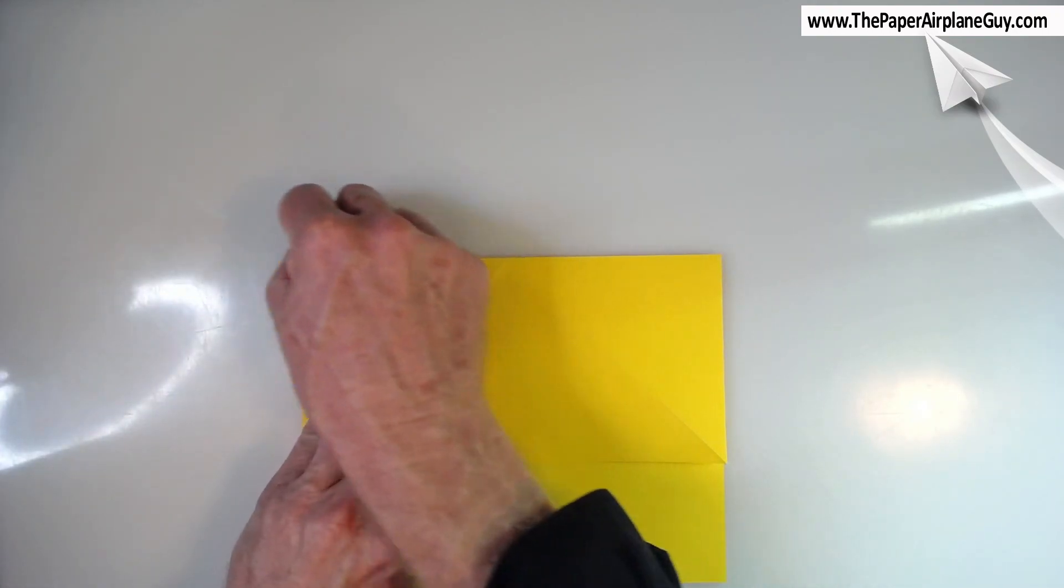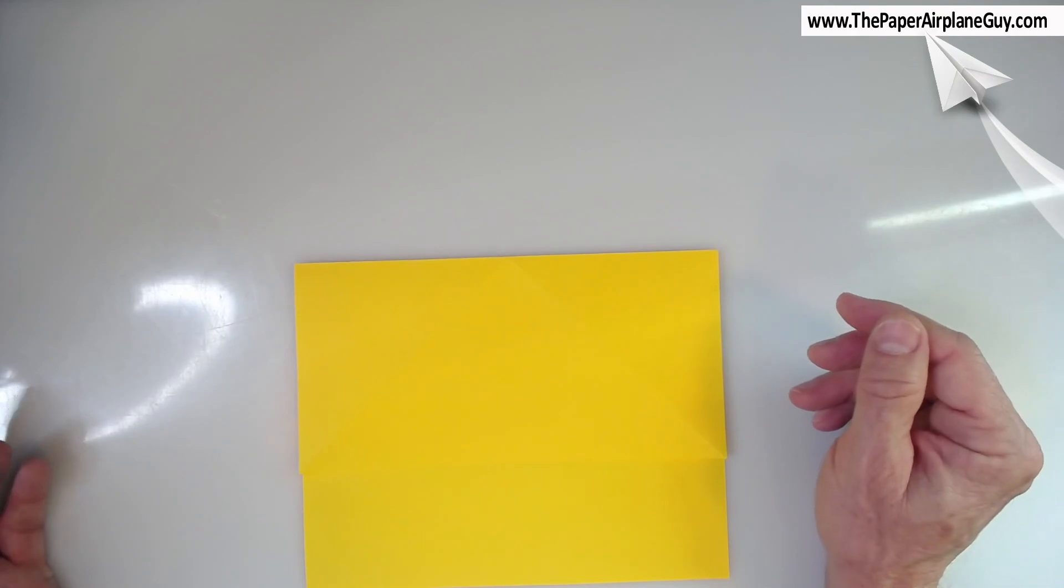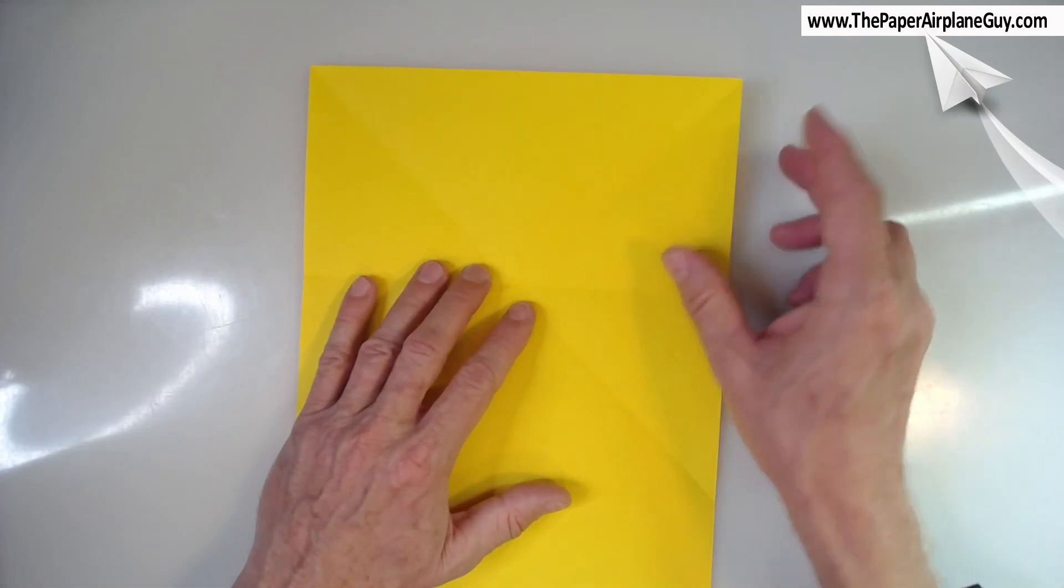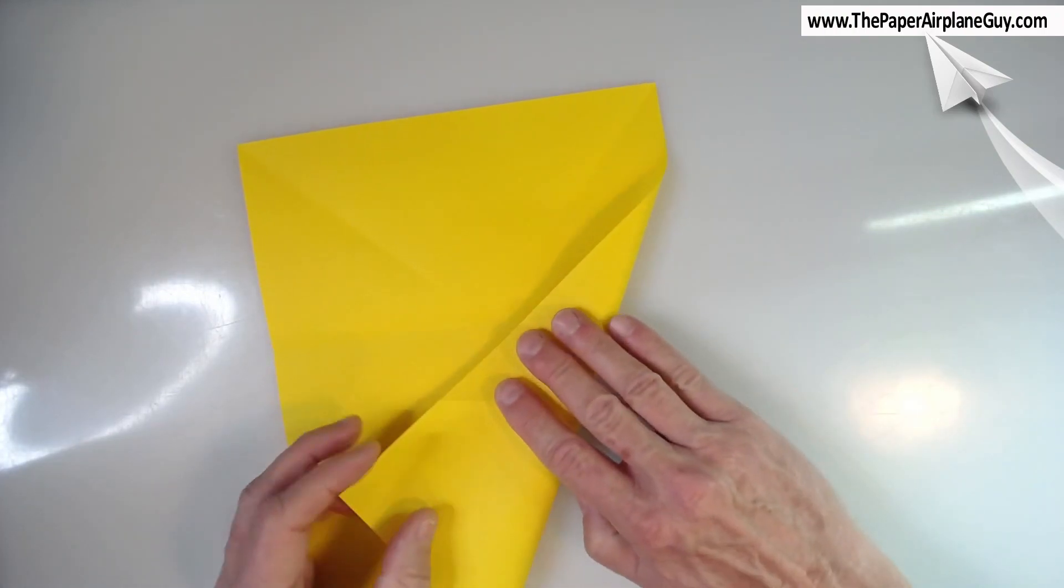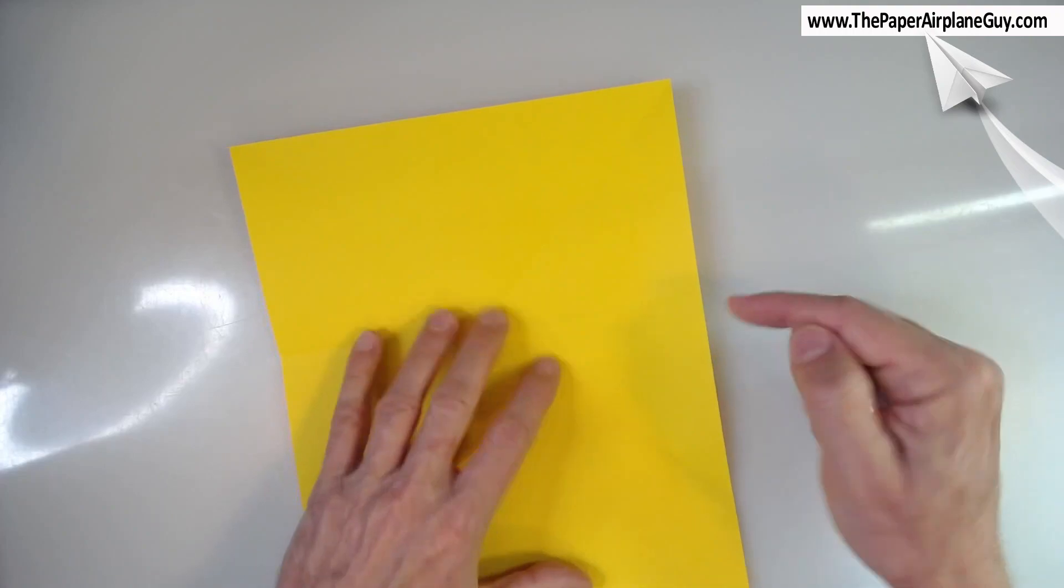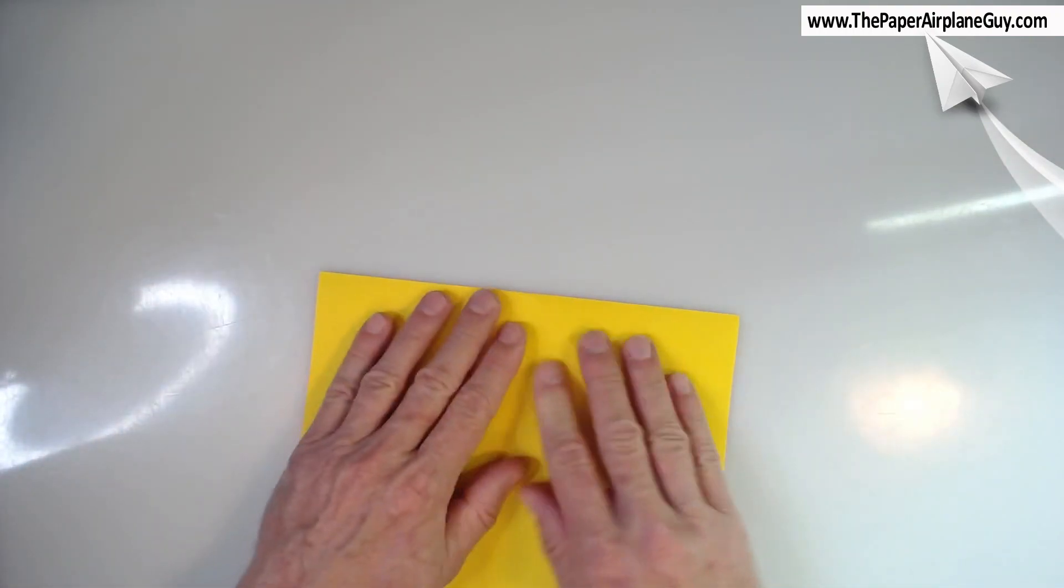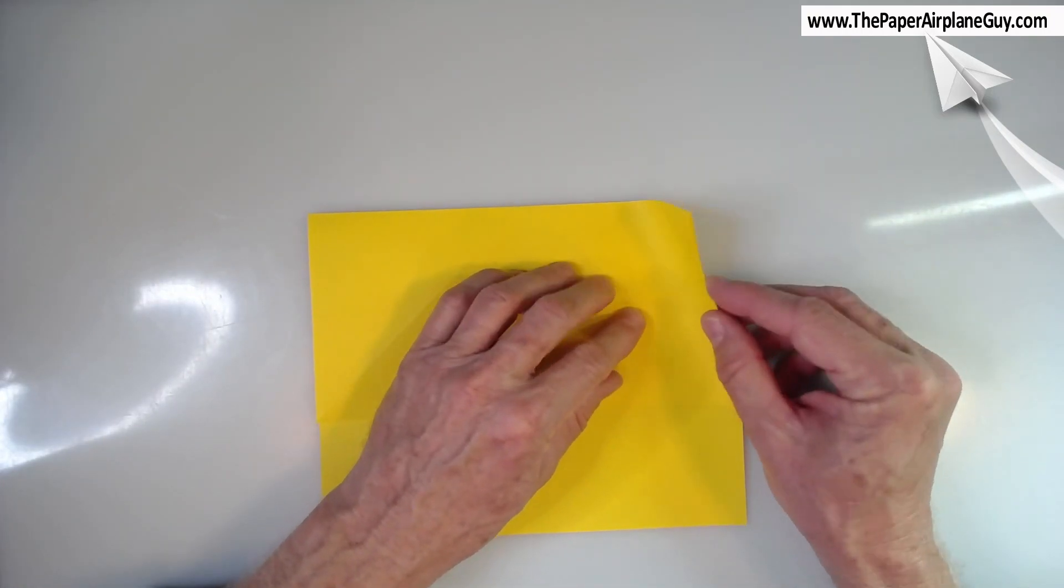And now we're going to do a couple of reverse folds. Now you could do this without reverse folds. You could open this up and make a crease that goes that way and then make a crease that goes this way. You could go that way and that way and then collapse that in like this. But there's a much quicker way to do it. When I originally diagrammed the gliding flight, that's how I showed people how to do it.